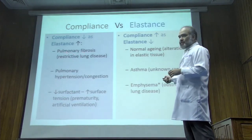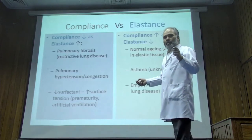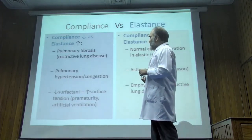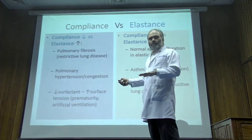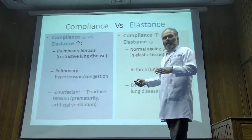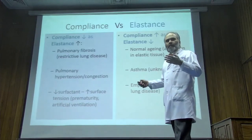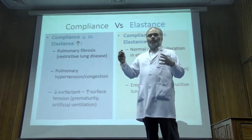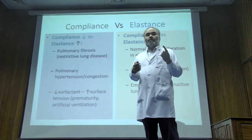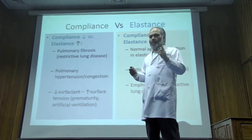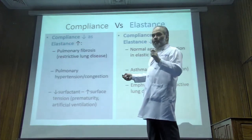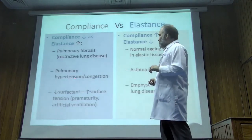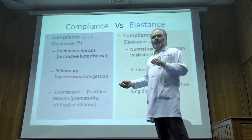Pulmonary fibrosis: it is a restrictive lung disease. Compliance decreases in this group of disorders, and elastance — i.e. elastic recoil — increases. That is what defines a restrictive disorder: elastic recoil is too much compared to a normal lung, hence it is a stiff lung. For pulmonary hypertension, the word 'hypertension' gives it away — there is too much blood pressure inside the lungs.